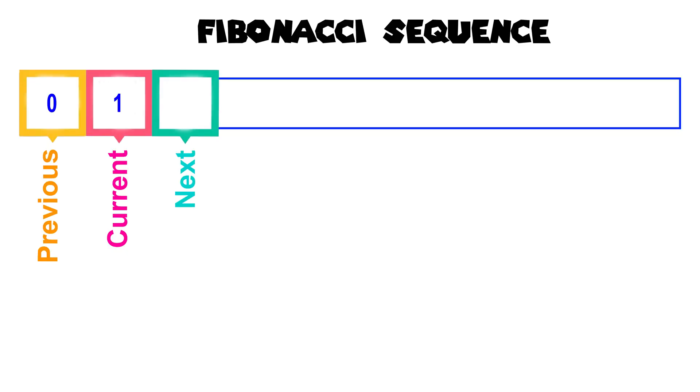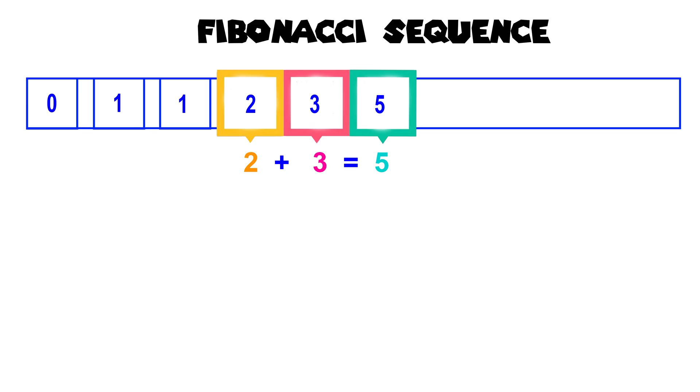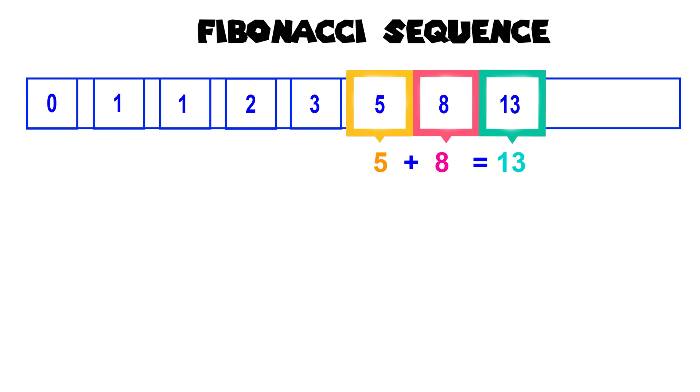This is the Fibonacci sequence. You start with 0 and 1, then add the two numbers before to get the next one. So 0 plus 1 equals 1, 1 plus 1 equals 2, 1 plus 2 equals 3, 2 plus 3 equals 5, 3 plus 5 equals 8 and so on.